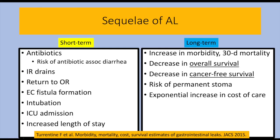Leaks are associated with numerous short-term and long-term complications. Prolonged antibiotic use and associated diarrhea is common. In contained leaks, IR-placed drains are ubiquitous, but not without associated risks. Returns to the OR may be warranted with large and uncontained leaks. Postoperative short-term complications such as the development of enterocutaneous fistula, prolonged intubation, ICU admission, and increased length of stay are common. Long-term sequela include increased morbidity and mortality, decreases in overall survival, decrease in cancer-free survival, the risk of a permanent stoma, and the exponential increase in cost of care.